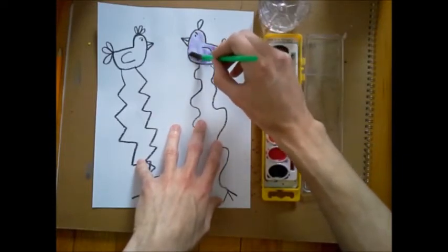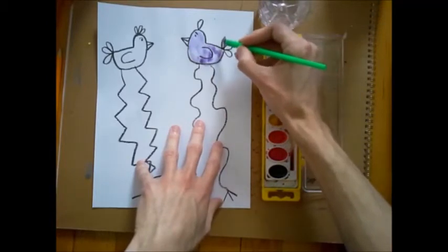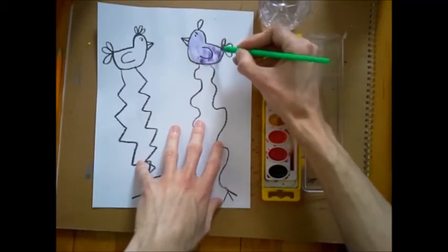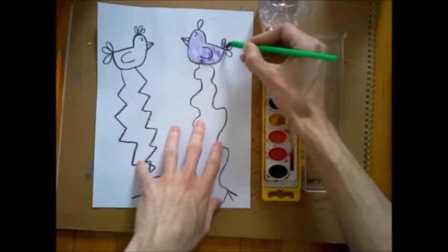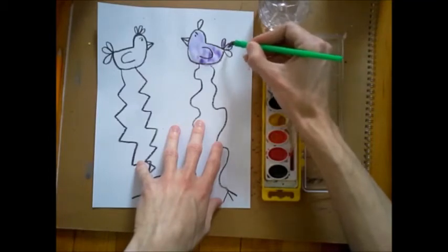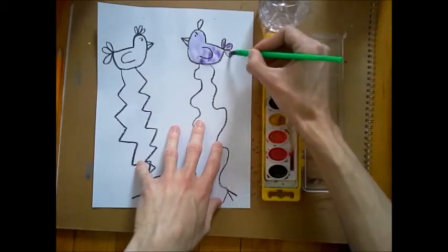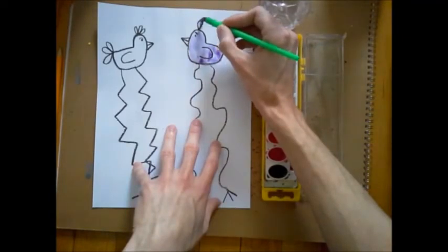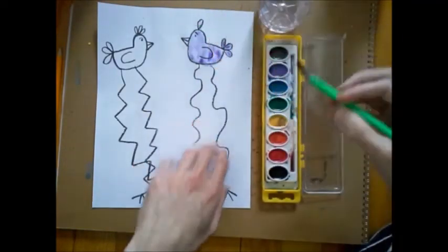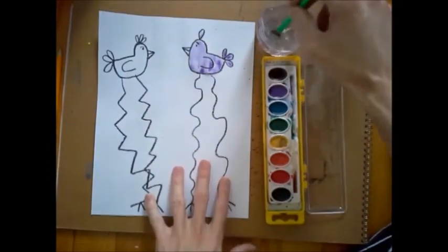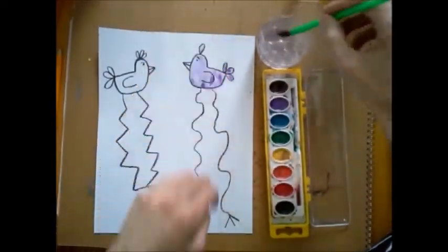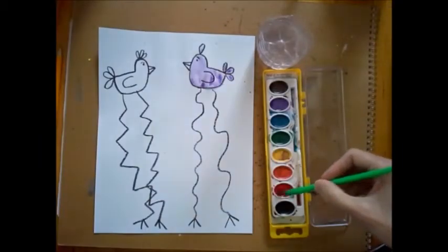Also the nice thing about this is that the crayon helps to keep the paint in one spot. It kind of holds it in place. All my purple paint on this bird is just staying within the black lines that I drew with crayon. I'll clean off my brush a little. Maybe this next bird I'm going to make red.